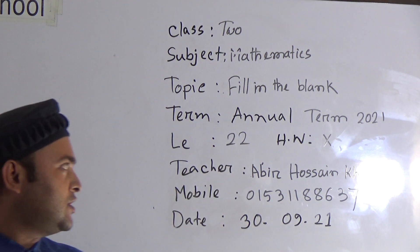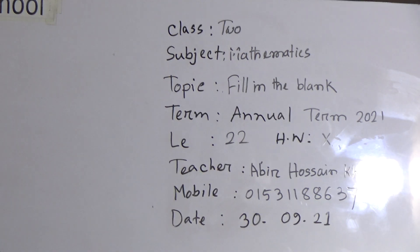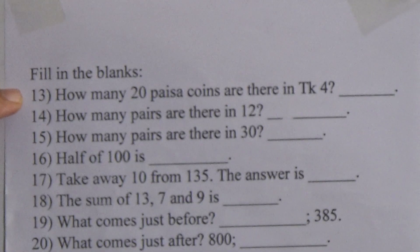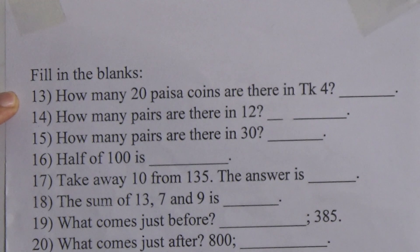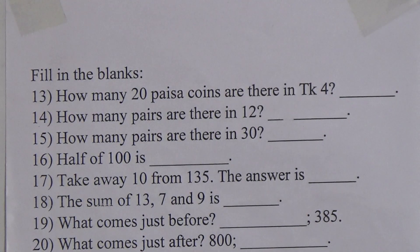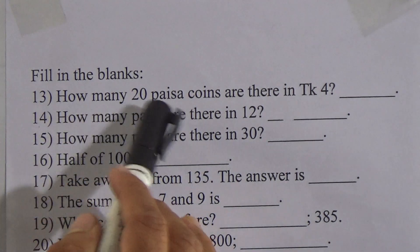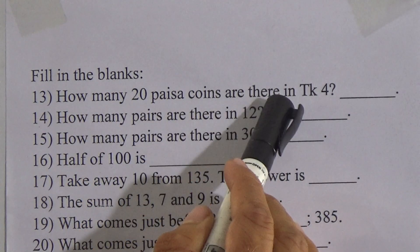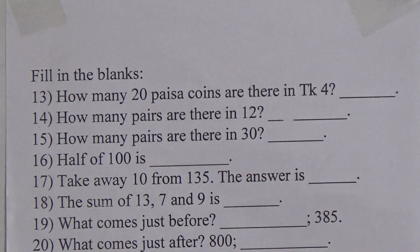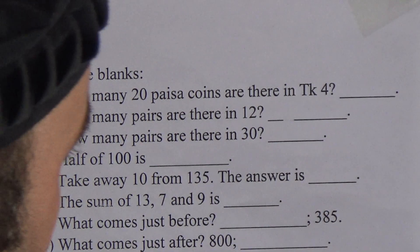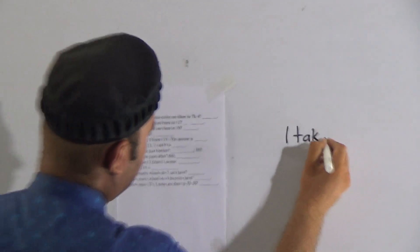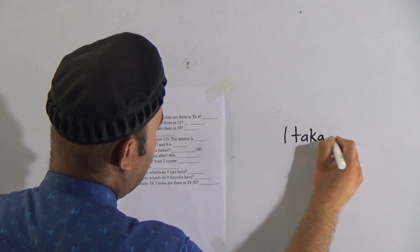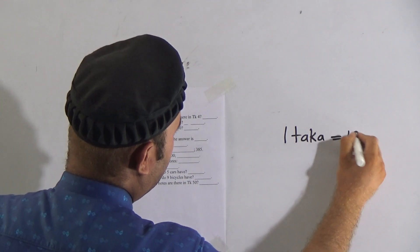My students, let's start our class. Look here — we are starting from question number 13. In the last class we have already learned questions 1 to 12. Look at question number 13: how many 20 paisa coins are there in 4 taka? My dear students, we know that 1 taka is equal to 100 paisa.